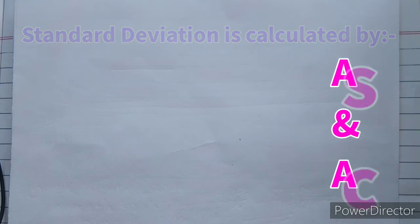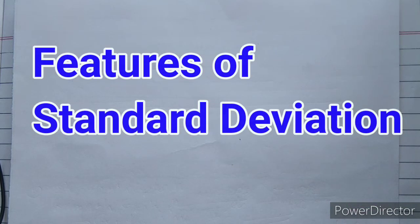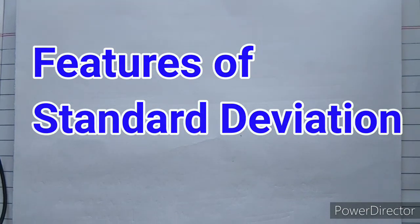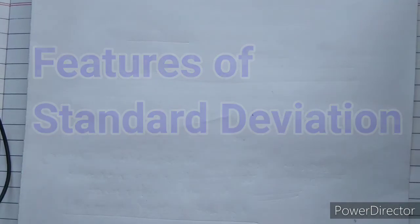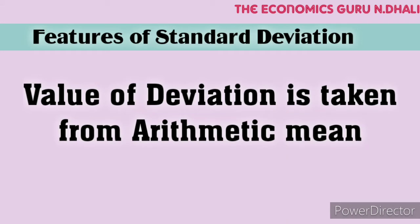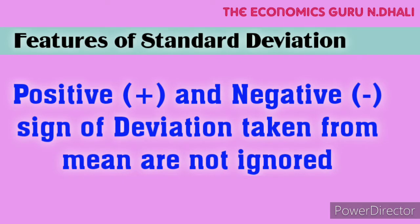Next, we have to know the features of standard deviation. One by one, we go through the features. The first feature is that the value of deviation is taken from the arithmetic mean. The next feature is positive and negative signs — the positive and negative sign of deviation taken from the mean are not ignored by standard deviation. In mean deviation the signs are ignored, but in standard deviation, positive and negative signs are very useful and very important for the calculation.